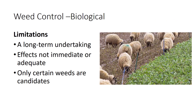Biological weed control involves the use of other living organisms, such as insects, diseases, or livestock, for the management of certain weeds. In theory, biological control is well-suited for an integrated weed management program. However, the limitations of biological control are that it is a long-term undertaking, its effects are neither immediate nor adequate, only certain weeds are potential candidates, and the rate of failure for past biological control efforts has been fairly high. There have been a few success stories of weed species being managed with insect or disease biological agents, but normally it is in natural areas or pastures. Herbivores, such as sheep or goats, can provide successful control of some common pasture weeds. Research continues in this area of weed management.